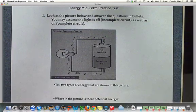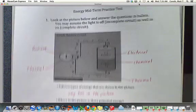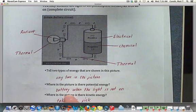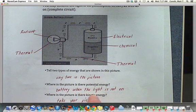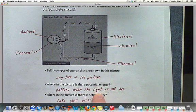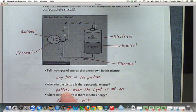The next question is, where in the picture is there potential energy? Well, the place with the potential energy is the battery. And it's when the light is not on, but really it has potential energy the whole time until the battery is dead. But at any rate, the battery is where you have stored energy.